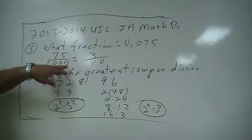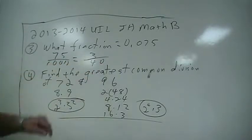25 going to this 3 times. 25 going to 1,000 40 times, so that's 3 over 40.